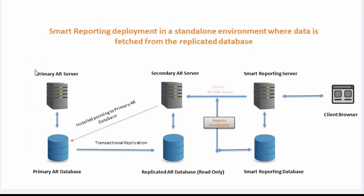As you see in the diagram, it has two parts: one is the AR setup and the other is the Smart Reporting setup. The AR setup has two AR servers — one is the primary AR server and the other is the secondary AR server. The secondary AR server may not be part of the server group, as it will have a separate database which is a replica of your primary database.